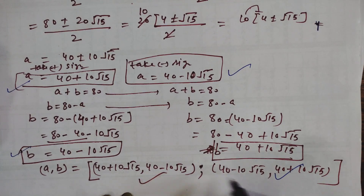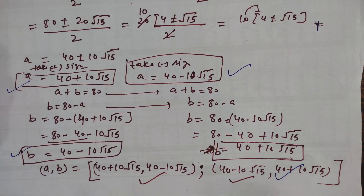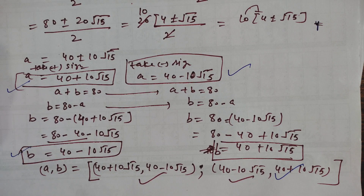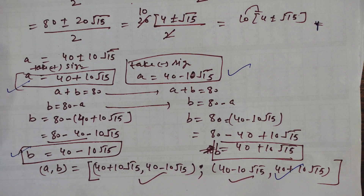So the two solutions are: A = 40 + 10√15 and B = 40 − 10√15, or A = 40 − 10√15 and B = 40 + 10√15. Hope you have understood this question. If you like this video, please like, share, and subscribe to my channel, press the bell icon for more videos, and go through the playlist of Olympiad Math. Thank you for watching.